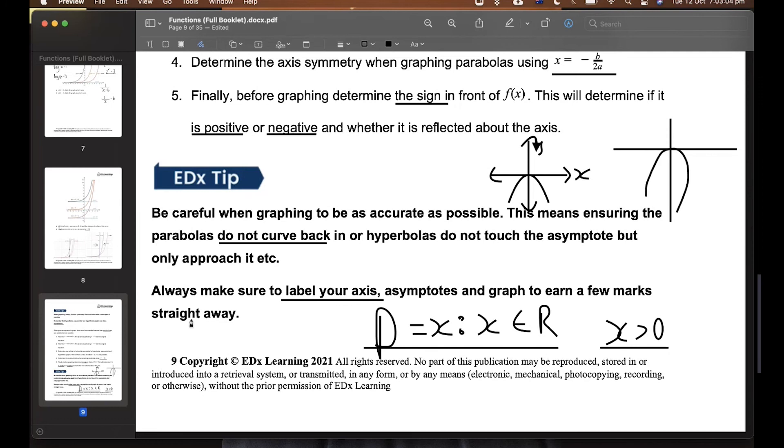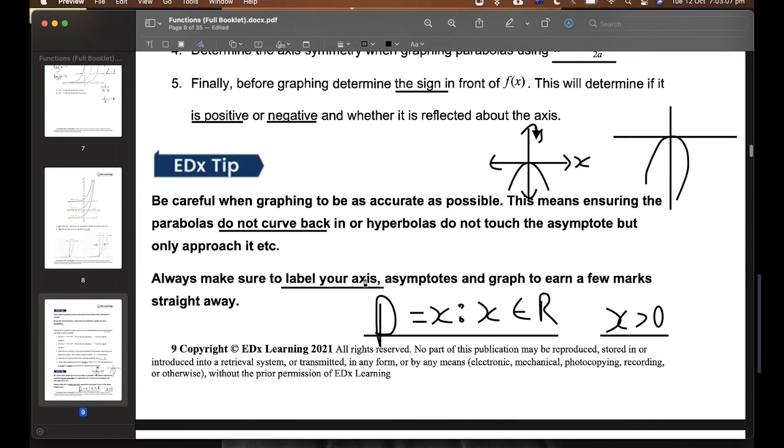Remember your axes have to have two things. What things do your axes have to have? Your y and x intercepts. Good, yeah, that's your graph, but how about when we're labeling our actual axes? We don't have a graph yet. We're just labeling our axes.